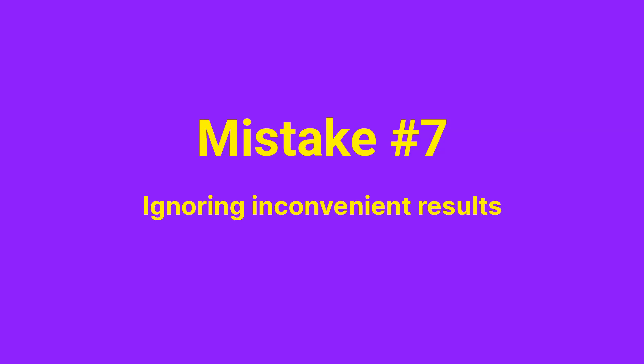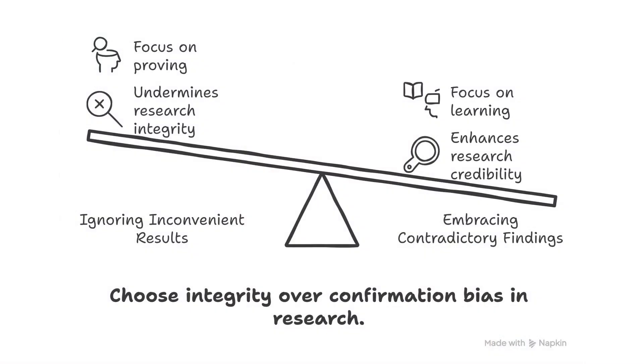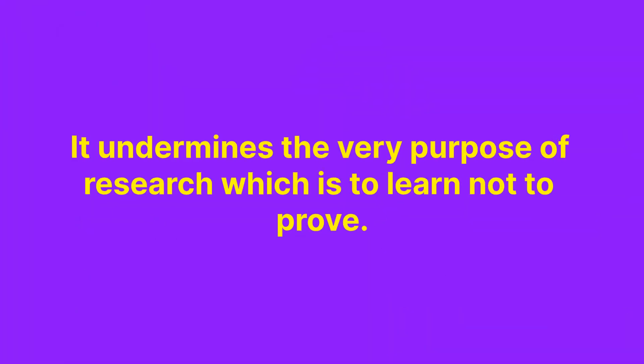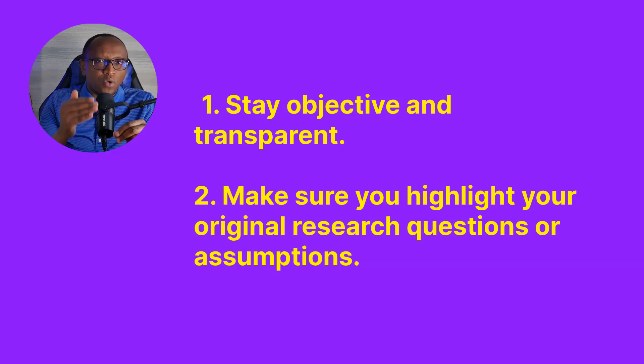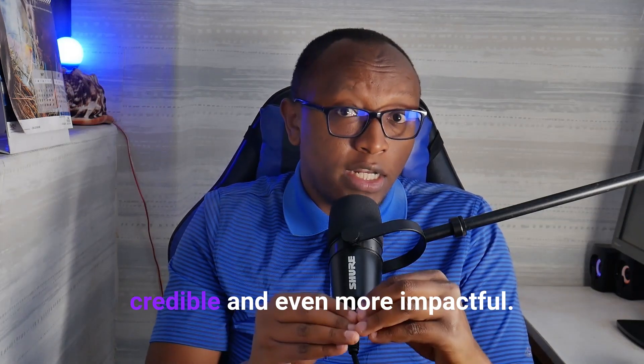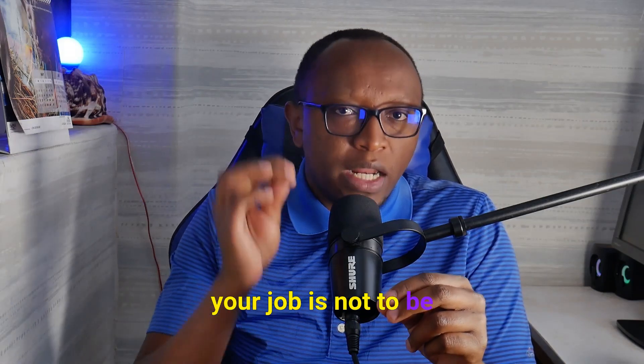Mistake number seven: ignoring inconvenient results. Some researchers go into analysis with a fixed outcome in mind, and when the data doesn't align, they cherry-pick, twist interpretations, or straight up ignore what participants actually said. This undermines the very purpose of research, which is to learn, not to prove. Instead, stay objective and transparent. If your findings contradict your expectations, that's not failure — it's valuable insight. Explain how the data led you somewhere else. This kind of openness doesn't weaken your study; it makes it stronger, more credible, and more impactful. In qualitative research, your job is not to be right — it's to be rigorous.